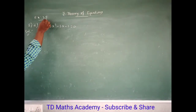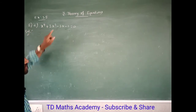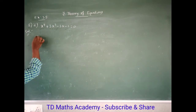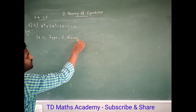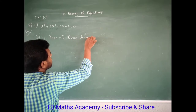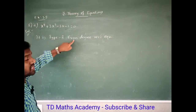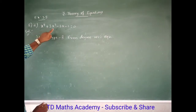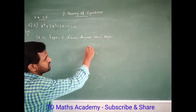Exercise 3.5, question number 5, problem number 2 — this is a reciprocal equation type model sum. This is Type 2 even degree reciprocal equation. As already told in the concept video, the middle term is zero — the middle term x² coefficient is zero — so this is a Type 2 even degree reciprocal equation.